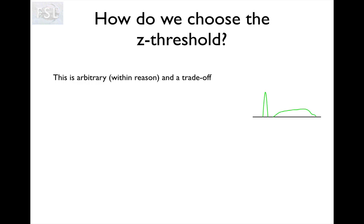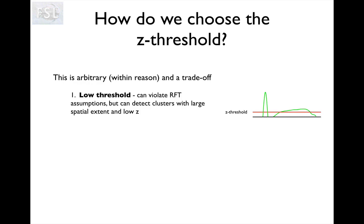How do we choose this set threshold? It's arbitrary within reason, and it's a trade-off. If we choose a low cluster forming threshold, we get in this example one large cluster and one small cluster. If you have a low initial cluster forming threshold, the size threshold will be high. So it is likely we will say the larger cluster is significant, but the smaller cluster is not significant because it hasn't had a large enough spatial extent.